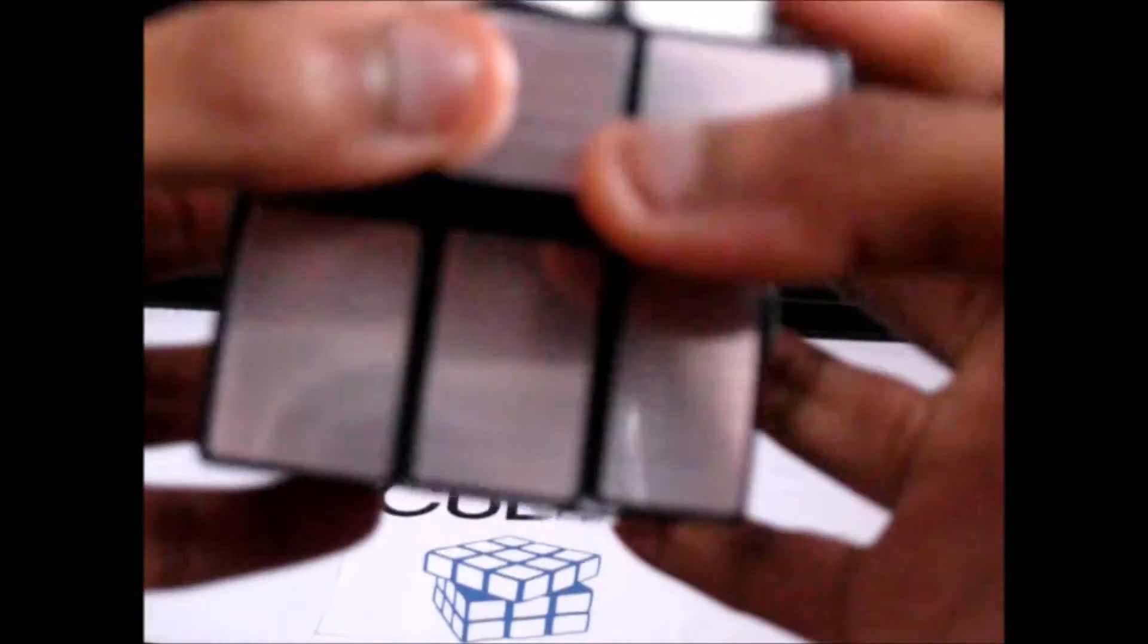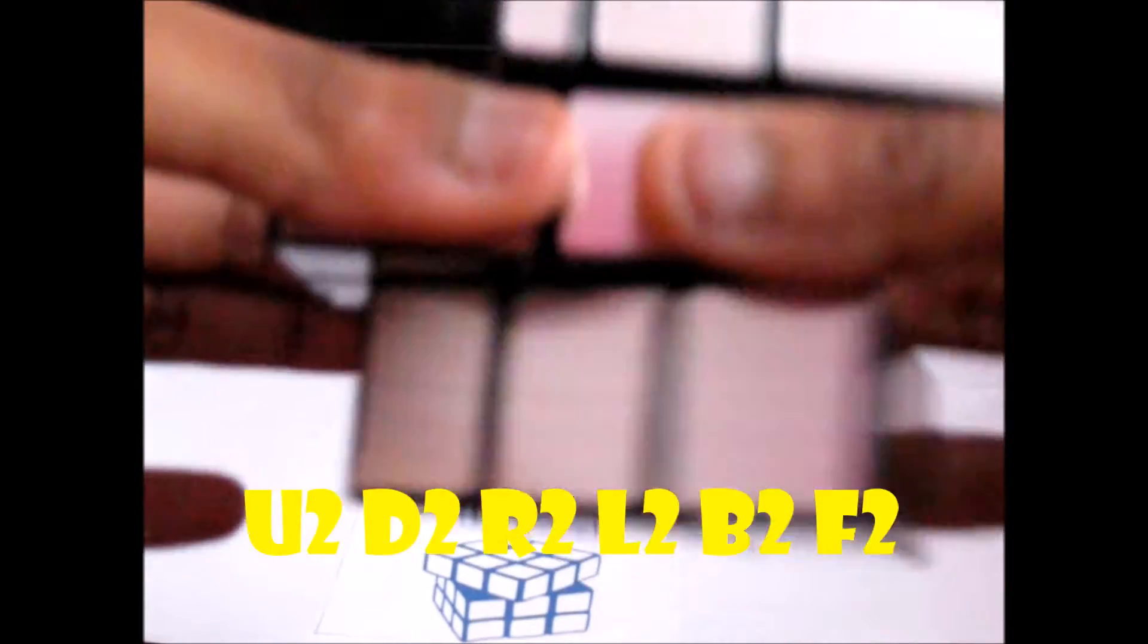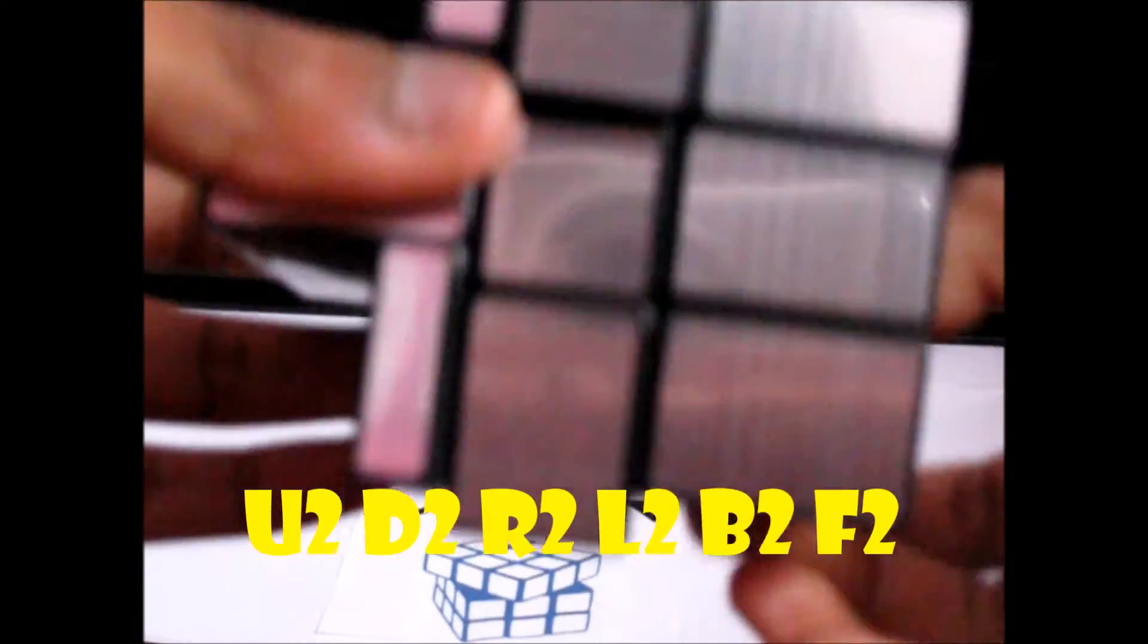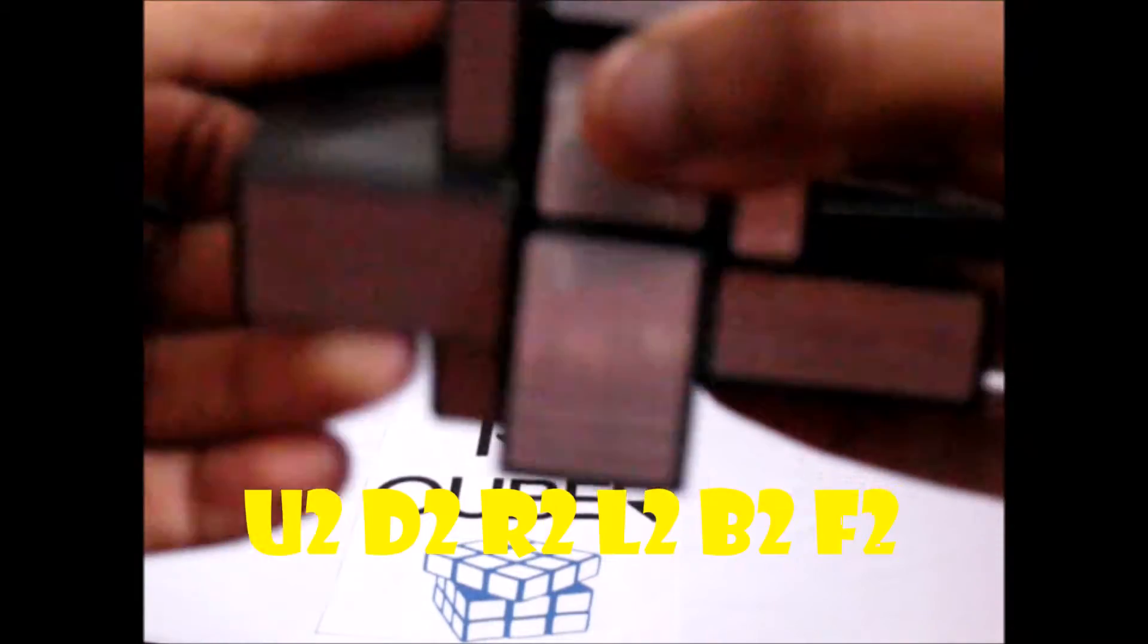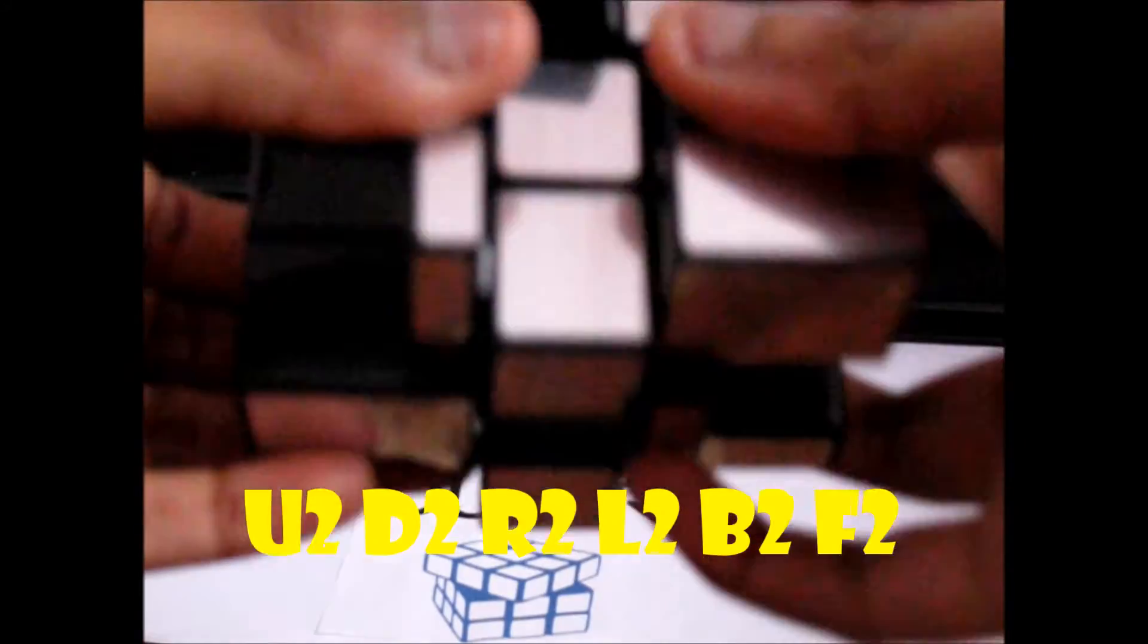And then to redo it you can just do the algorithm. But I'm just going to quickly show you that when you do all the faces two times it still gets you to the same pattern. So U2, D2, R2, L2, B2 and F2. So that brings you to this checkerboard pattern.